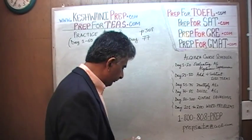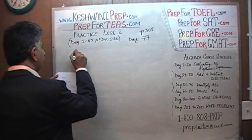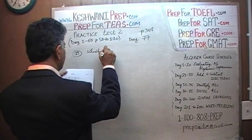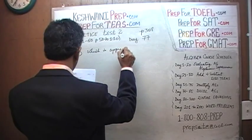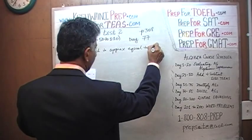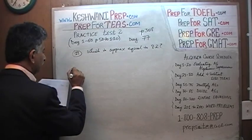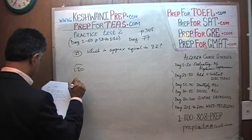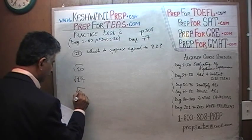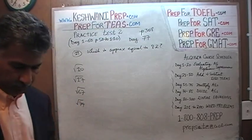Let's take a look at the very first problem on the page — problem number 19. Problem number 19 is asking us which value is approximately equal to 8.2. The answer choices given are: the square root of 10, the square root of 17, the square root of 67, and the square root of 79. Let's take a look at them one by one.